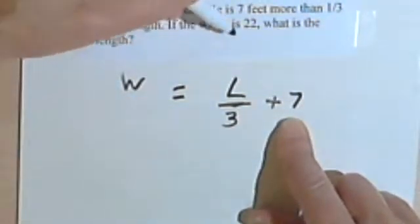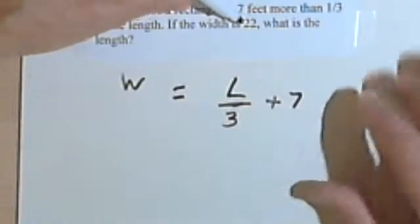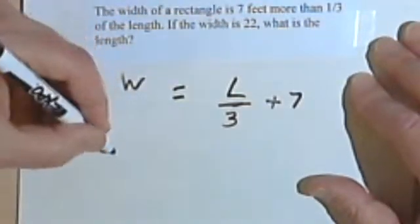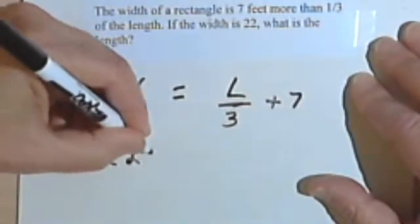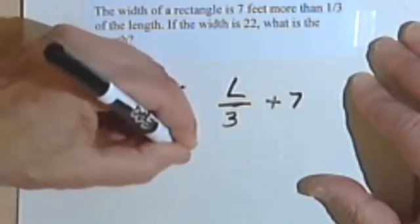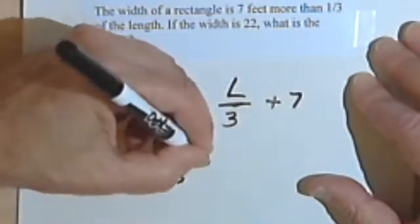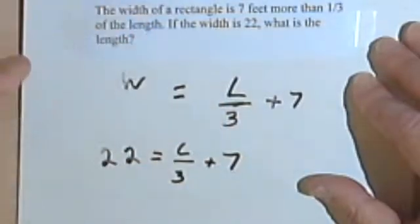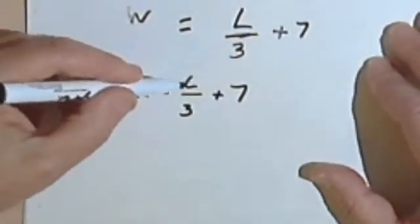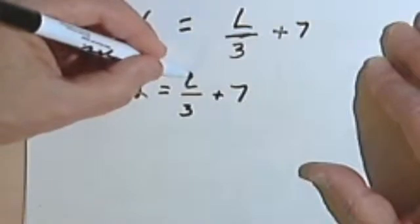And my problem also tells me that the width is 22. So instead of W, I'm going to put in 22. So 22 equals L over 3 plus 7. And now all I've got is this one variable, the L, so I should be able to isolate that.